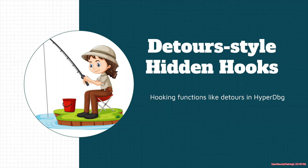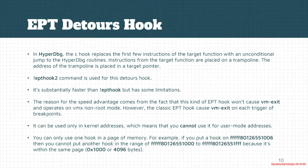There's another type of hooks called detour-style hooks. These are hooks that do not work with a breakpoint or a hidden breakpoint. These hooks simply replace the start of a function or the routine you want with a target function or a trampoline to move execution flow to another function or a hypervisor function. After that, it executes the patched instructions not available in the target function and eventually returns to the normal execution flow.